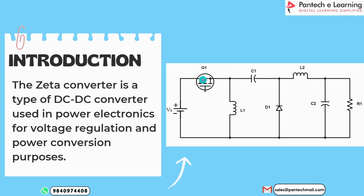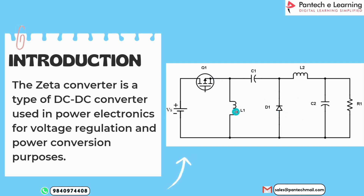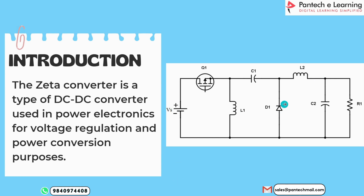In Mode 2, the switch is in open condition. When the switch is open, the diode will be forward biased — this shows open circuit for the switch and short circuit for the diode. At that time, inductors L1 and L2 will be in a discharging state. The polarity of the inductors changes and the diode will be in a conducting state.